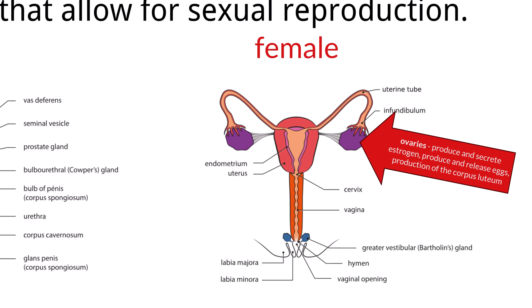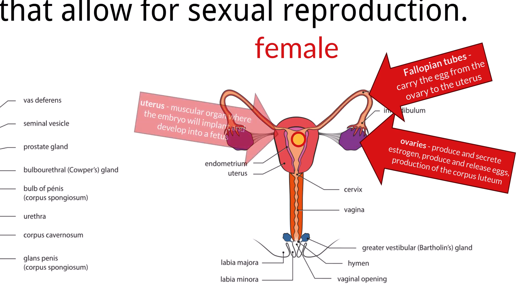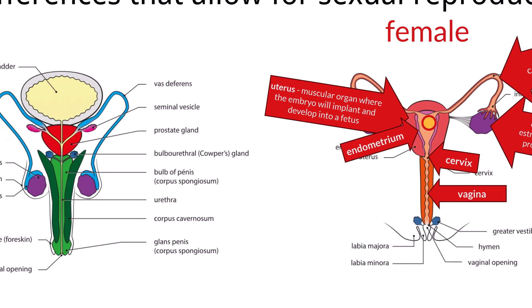The corpus luteum acts as a temporary gland producing estrogen. The fallopian tubes, also called the oviducts, are ducts that carry the egg from the ovary to the uterus. The uterus is a muscular organ where the embryo will implant and develop into a fetus. The lining of the uterus is called the endometrium, which is highly vascular. The lower part of the uterus is called the cervix, which has an opening for sperm to enter via the vagina and provides the exit for the baby. The vagina is a muscular tube that leads from the uterus to the outside — this is where semen is ejaculated and serves as the birth canal.